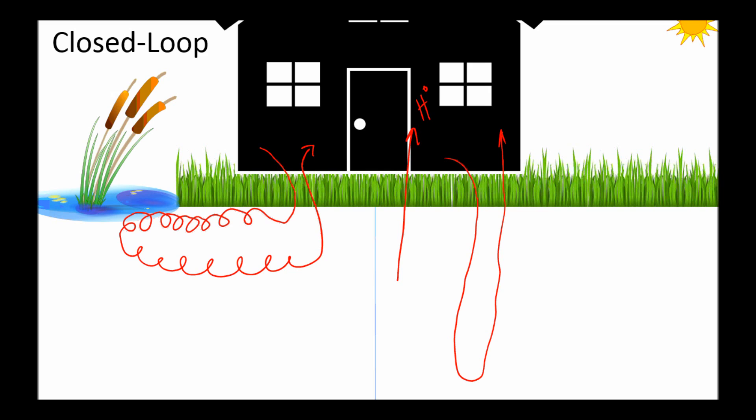During the summer, that process is reversed. The geothermal system pulls heat out of the home and lets it be absorbed by the ground. The result is a cool, dehumidified home.